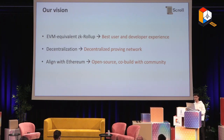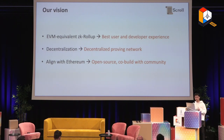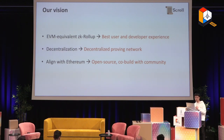Second, we care about decentralization, and we will achieve full decentralization step by step. First, we will decentralize our proving network. In a traditional ZK rollup, you generate blocks yourself, generate proofs yourself, and submit the proof yourself. But what we are doing is opening proof generation to a broader community, where they can use whatever hardware they want to generate proofs. Third, we are building in an open source way, and the ZK EVM circuit part is co-built with the community.